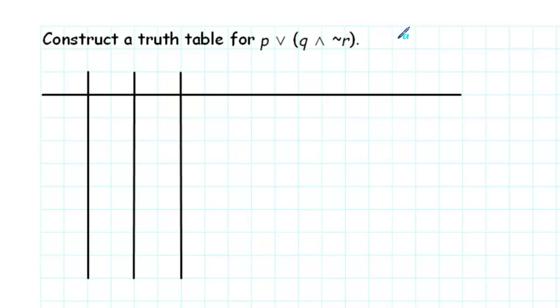That means that this truth table will need to have 2 to the third, which is equal to 8 different rows. So let's begin by filling in columns P, Q, and R.